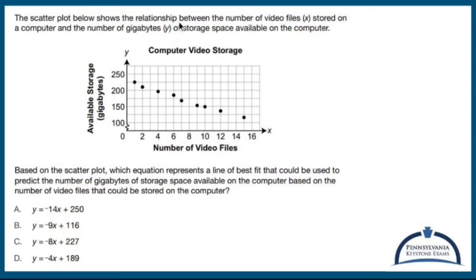The scatter plot shows the relationship between the number of video files x stored on a computer and the number of gigabytes y of storage space available on the computer. We have a bunch of dots, and it looks like the more video files you have, the less available storage you have. That's called a negative correlation.